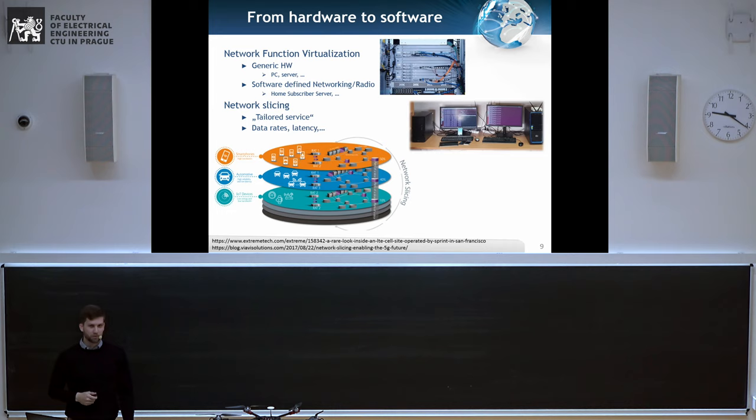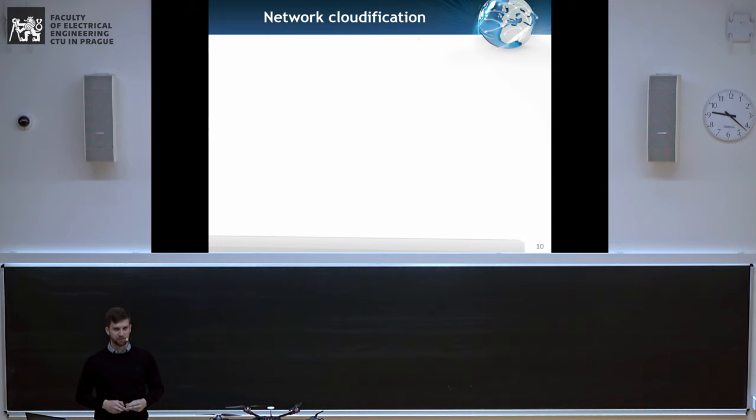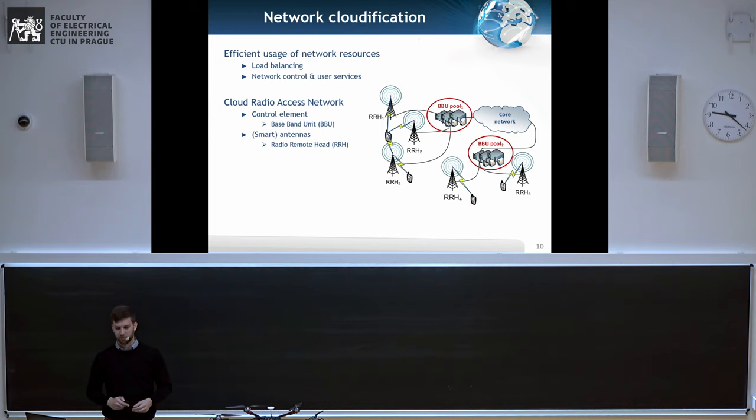And network slicing. As I was speaking about different requirements for networks, you can do it in a way that every user, for example, smartphones, automotive and IoT devices, which will have a slightly different communication type. If you communicate via your smartphone, the network will behave slightly different. And everything is basically done via software. And this basically, this softwareization leads to network cloudification.